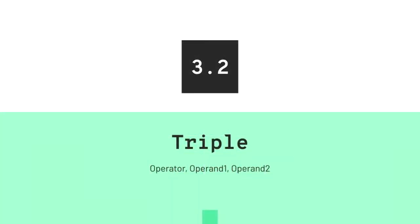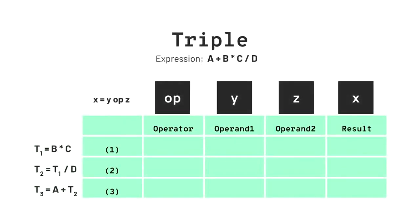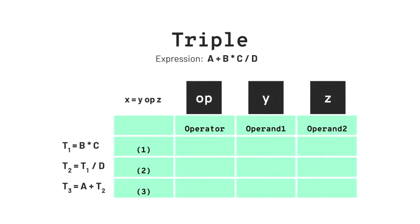Moving on to triple representation, it is the same as the quadruple, but we will remove the result field and instead write references using a temporary value. The first three address code is t1 = b * c. Here operator is star, operand1 is b, and operand2 is c.